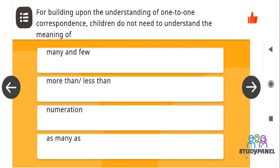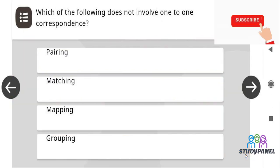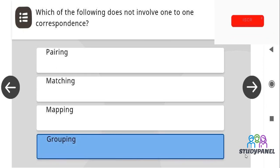For building upon the understanding of one-to-one correspondence, children do not need to understand the meaning of numeration. Which of the following does not involve one-to-one correspondence? The correct answer is grouping.